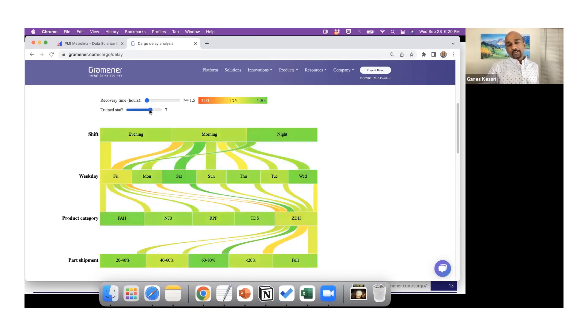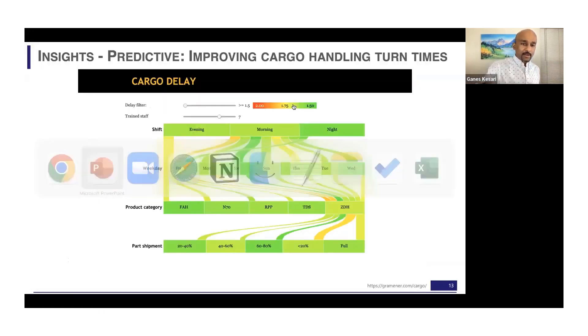This is where simulation and predictive analytics kicks in. Now it says assuming I have seven people, how much time would it take on a Friday morning or to handle fragile items. And then it comes up with certain recommendations and says by the way, when you have seven people, most of these flows turn green. So you check whether this is an acceptable level to meet your SLA and you move on. So this is an example of predictive analytics.